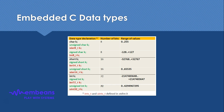In embedded C there are similar kinds of data types available as in the standard C language. We can define our character, we can define our integer, we can define any string also. Now the most important thing coming in embedded systems is the usage of signed or unsigned for the variable.